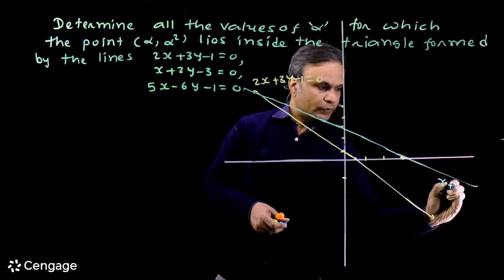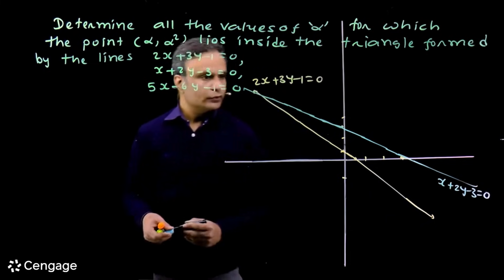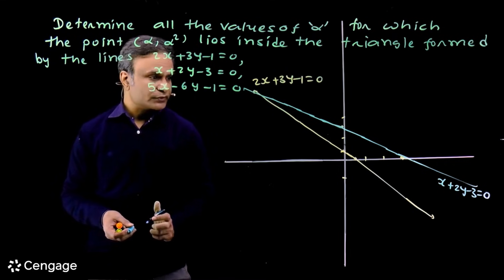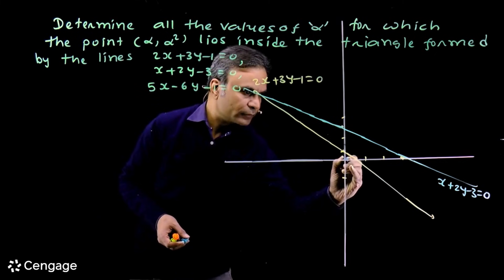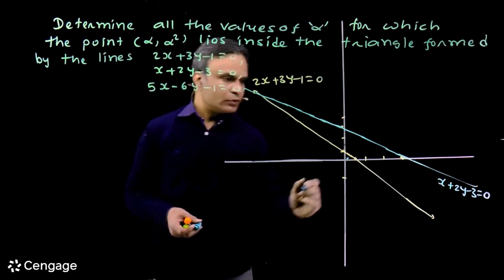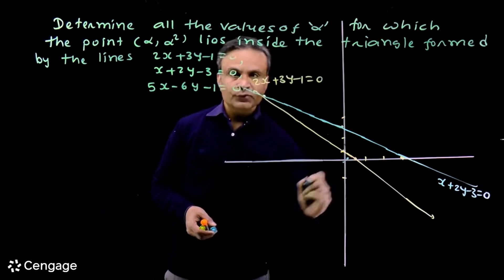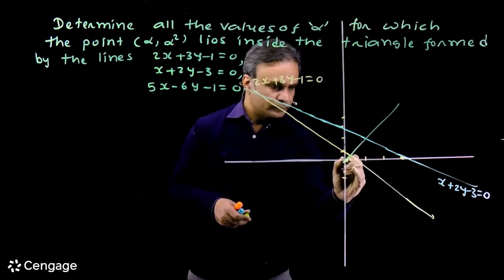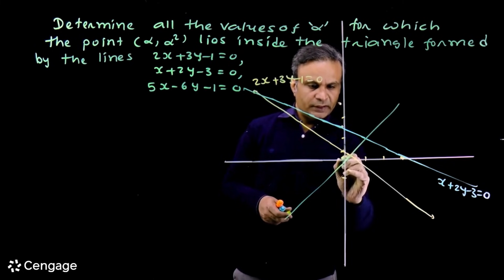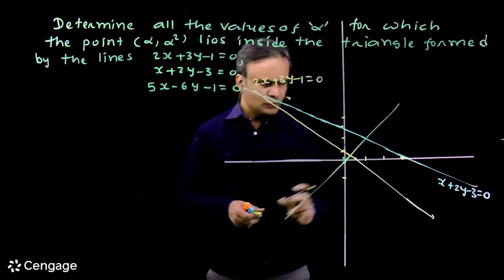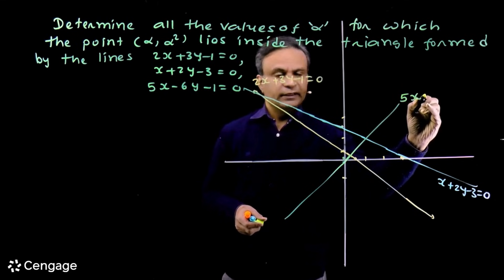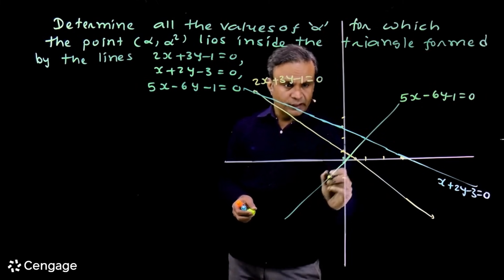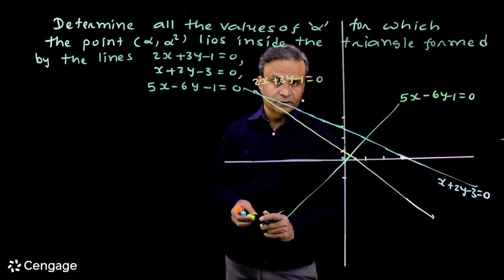This is a straight line. For the third line, 5x minus 6y minus 1 equals 0, the x-intercept is 1/5, which is a very small value, and the y-intercept is minus 1/6. Both are very small values close to the origin. We join these two points. Note that the origin lies on one side of this straight line.